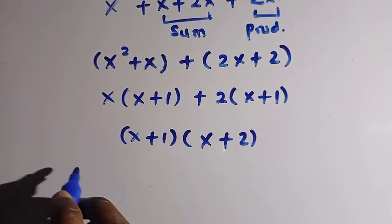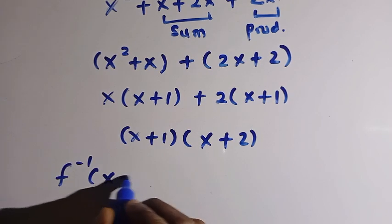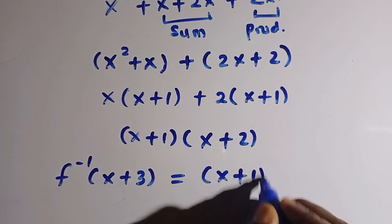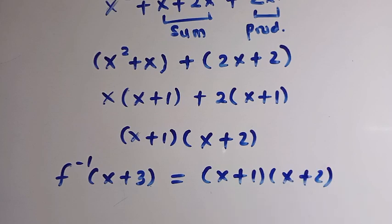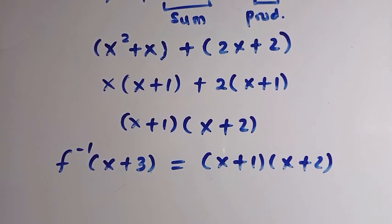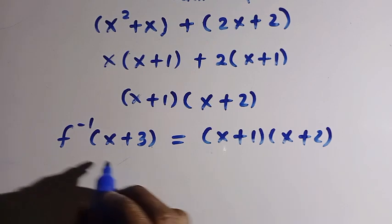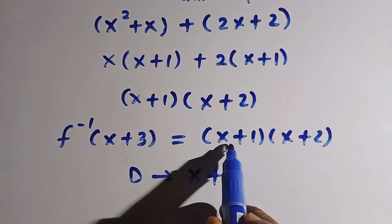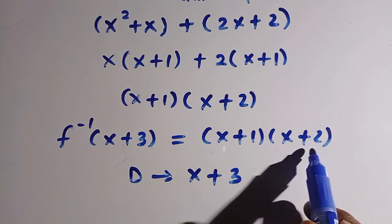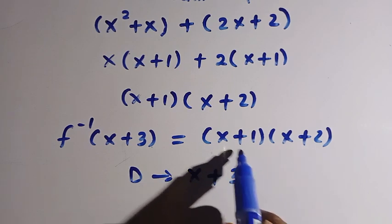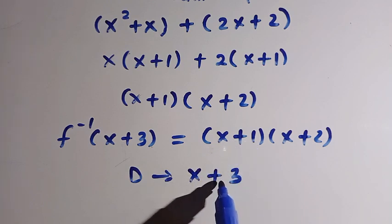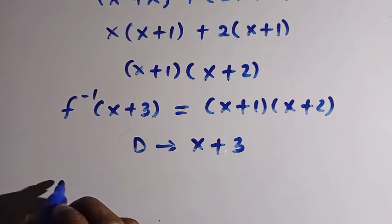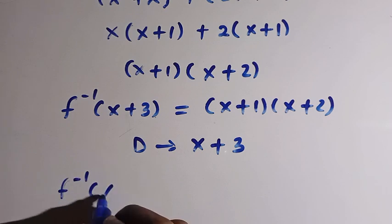We will now recall back from f inverse of x plus 3. So this equals the factored form x plus 1 multiplied by x plus 2. So we have just one domain here giving us x plus 3 on the left side, and on the right side we have x plus 1 and x plus 2. They don't resemble x plus 3. We have to make sure that x plus 1 looks like x plus 3, and x plus 2 looks like x plus 3. To achieve that, we have to do some little manipulation, as we have f inverse of x plus 3.